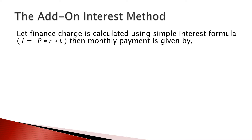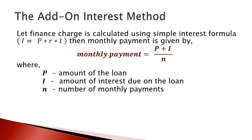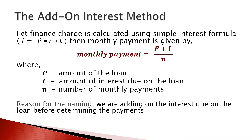The finance charge here is calculated using the simple interest formula: I equals principal times rate times duration. The monthly payment is given by the amount of the loan — the principal — plus the interest computed for that loan amount, divided by the number of monthly payments (n). As the name suggests, we are adding on the interest to the loan amount before determining the payments, so this is called the add-on interest method.